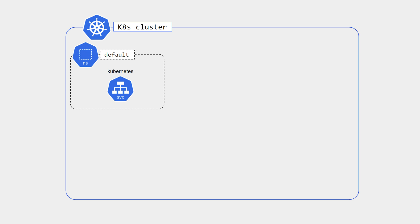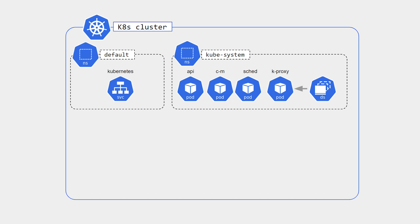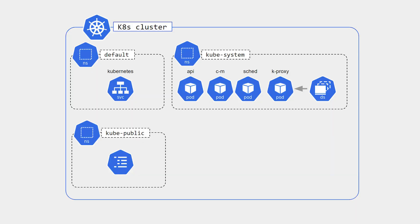Whatever resources you are creating — pods, deployments, services, ingress, anything — if you are not defining any namespace, all those will be tagged to the default namespace. The next is kube-system, which contains resources created by Kubernetes itself, like master node resources. Kubernetes does not recommend using kube-system for your new resources, and we should not be modifying anything in the kube-system namespace.